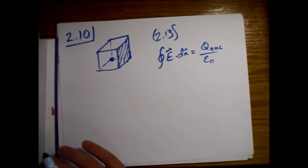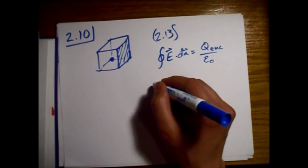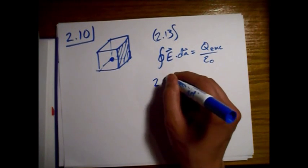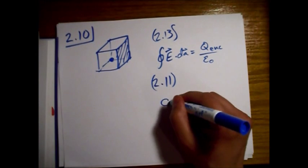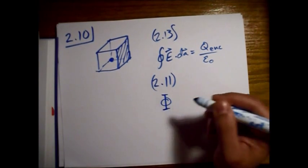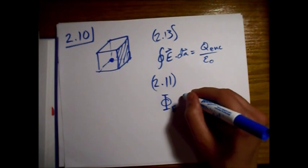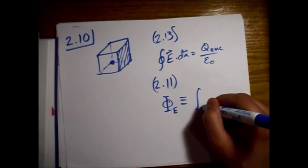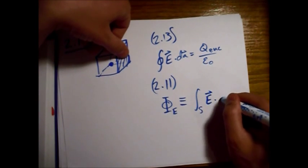Alright, and if we look up the way Griffiths writes the definition of electric flux, this is equation 2.11 where it uses this capital Φ. Okay, so that's defined as the integral over the surface of E dot dA.